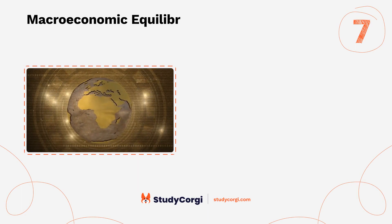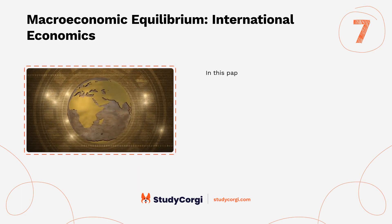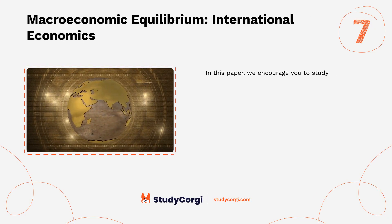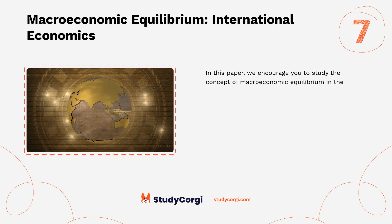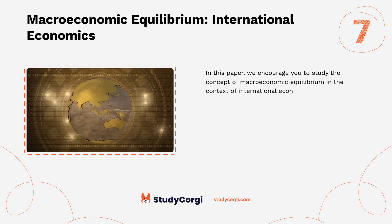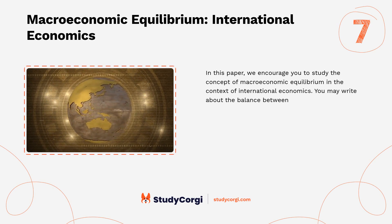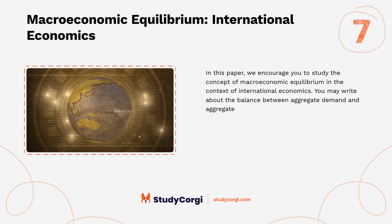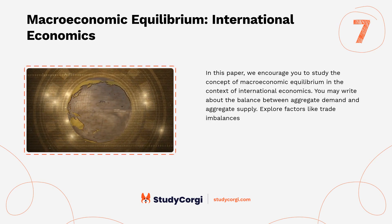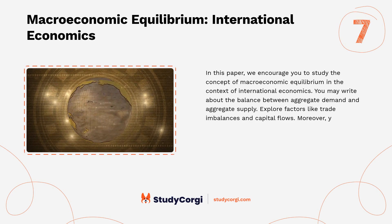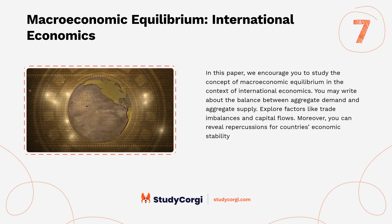Topic seven: Macroeconomic equilibrium and international economics. This topic examines the concept of macroeconomic equilibrium in the context of international economics, addressing the balance between aggregate demand and aggregate supply. It explores factors like trade imbalances and capital flows, and reveals the repercussions for countries' economic stability or growth.